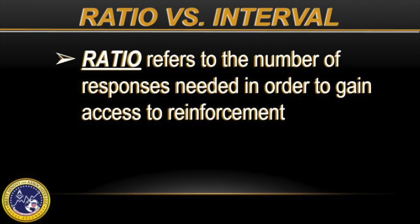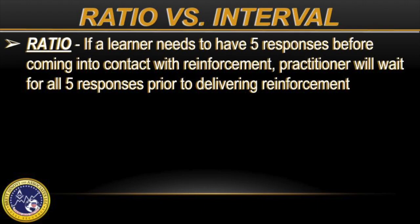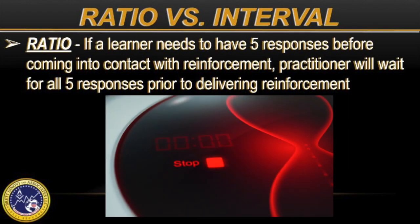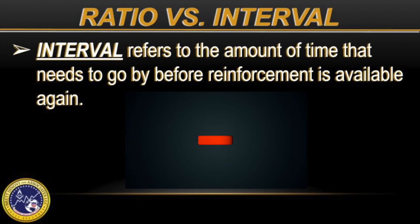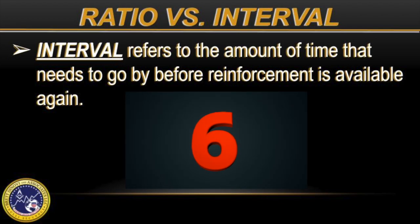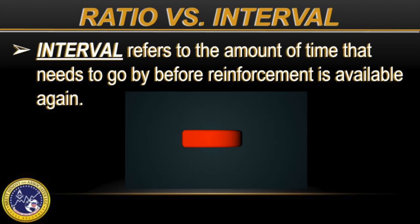Ratio refers to the number of responses needed in order to gain access to reinforcement. So if a particular learner needs to have five responses before they contact reinforcement, we're going to weigh all five of those responses. Next is interval. Interval refers to the amount of time that needs to go by before reinforcement is available again.